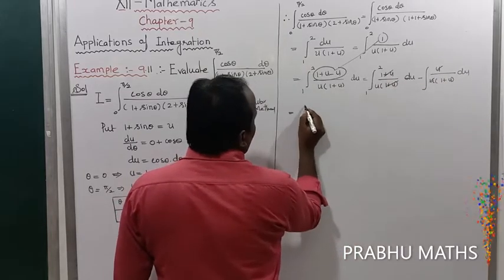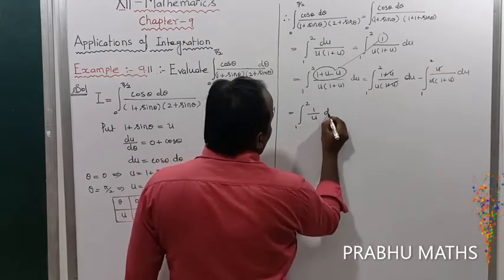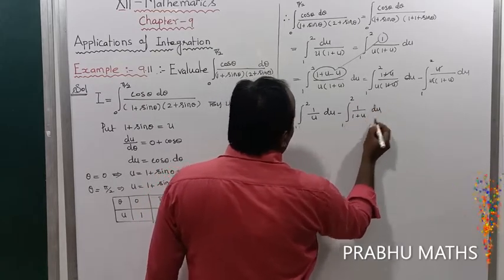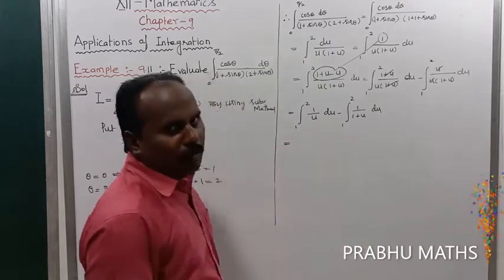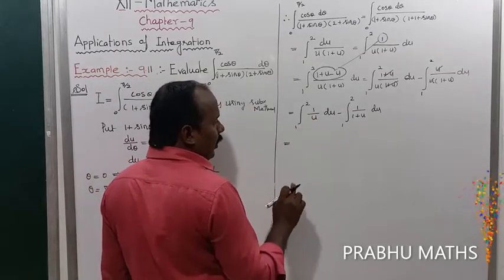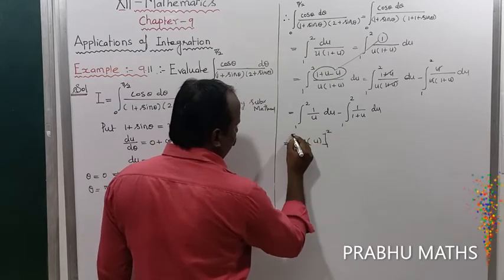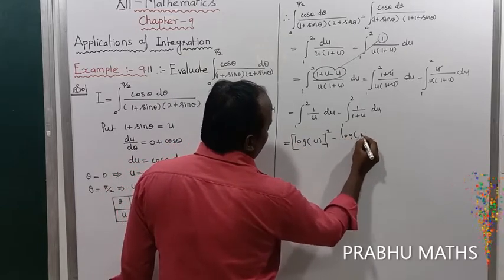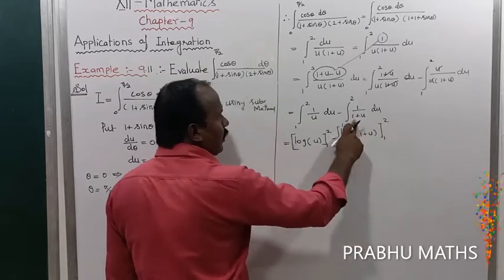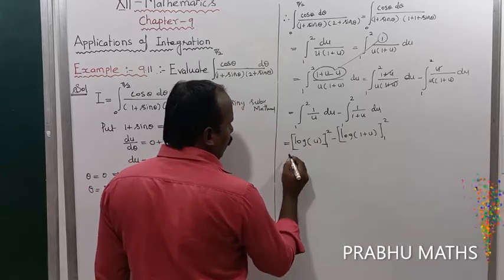After cancellation, this equals the integral from 1 to 2 of 1/u du minus the integral from 1 to 2 of 1/(1+u) du. Integrating gives ln(u) evaluated from 1 to 2, minus ln(1+u) evaluated from 1 to 2.